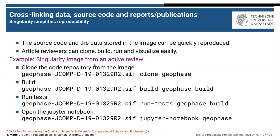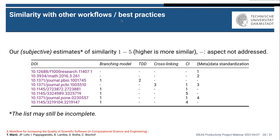Here's what it looks like in a live review: we have a Singularity image that's part of a publication currently under review. You can clone the repository, build the software, run the tests, and open the Jupyter notebooks from within the image with just a few commands — which is really great, especially for article reviewers who can do this without installing dependencies on their own machine. Other people are publishing similar workflows — I found a similar publication that uses JSON formats and web tools for data visualization, which we basically replaced with Jupyter notebooks. I wasn't even aware of that publication until recently, but it's really nice to see others catching on.